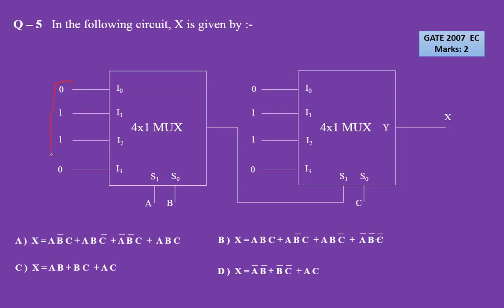If you remember the 0, 1, 1, 0 input pattern applied to a multiplexer, this gives the output as XOR of the select lines — that will be A XOR B. This is the select line for another multiplexer, and again the same input pattern is there. So the output X will be XOR of the select lines: S1 XOR S0, which is nothing but A XOR B XOR C.